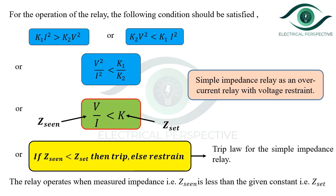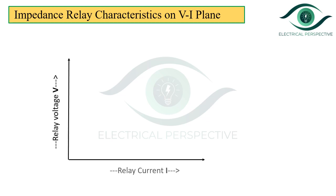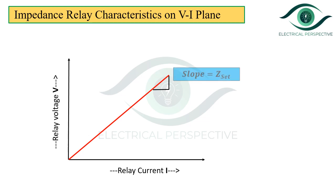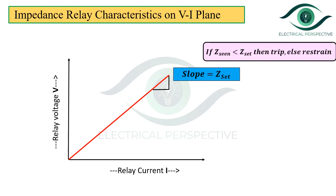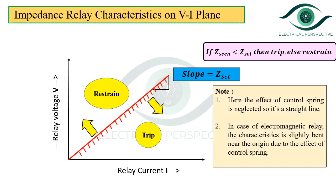The simple impedance relay is an overcurrent relay with voltage restraint. On the VI plane, the characteristics from the derived trip law is a straight line passing through the origin whose slope equals Z-set, the reach of the distance relay. The entire portion below the straight line is the trip region and the entire portion above is the restraining region. Note that the effect of the control spring is neglected here. In the case of an electromagnetic relay, the characteristic is slightly bent near the origin due to the effect of the control spring.